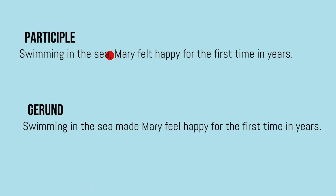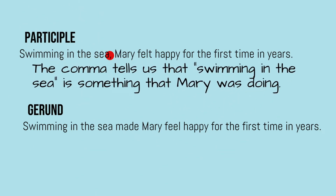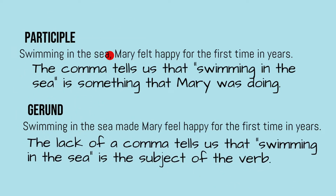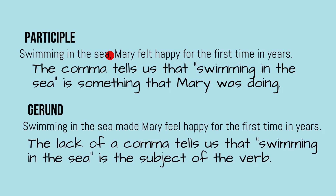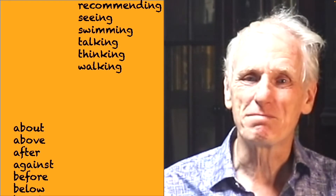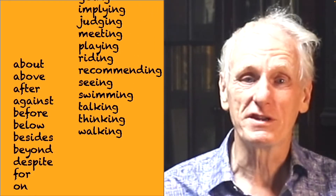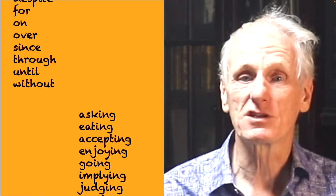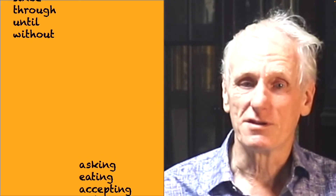We can also see a small difference in the punctuation. The comma in the first example tells us that "swimming in the sea" is something that Mary was doing, while the lack of a comma in the second example tells us that "swimming in the sea" is the subject of the verb. Remember, we don't put a single comma between the subject and the verb in English. Another useful tip: if the -ing form comes after a preposition, prepositions come before a noun, so if we see the -ing form after a preposition, we can say it's a gerund, not a participle.